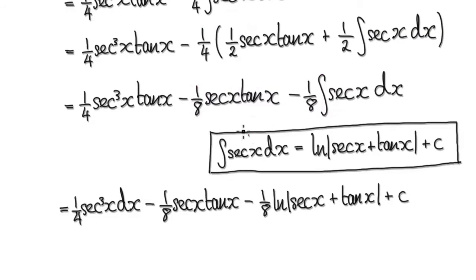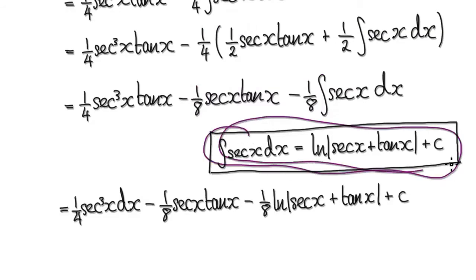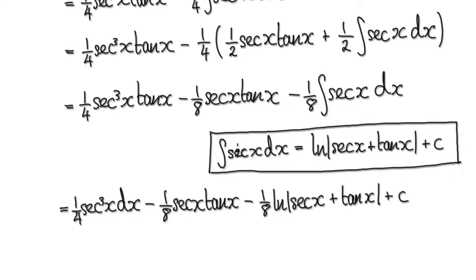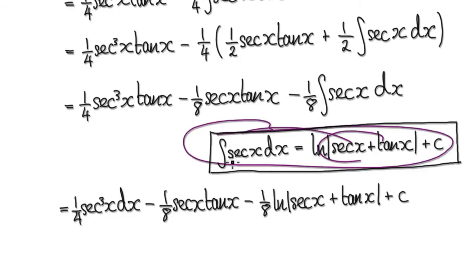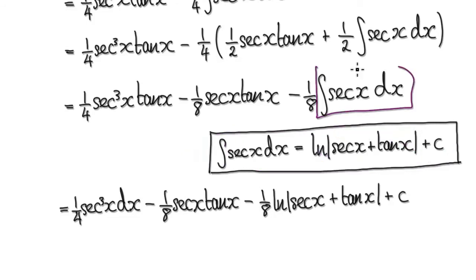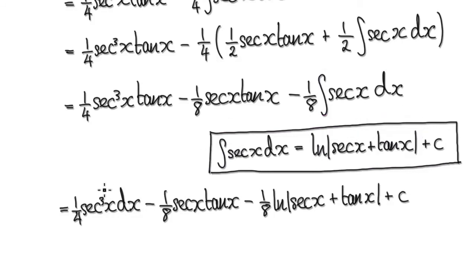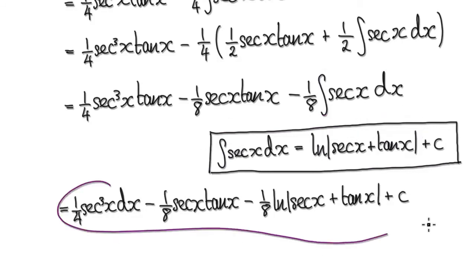We've done this many times, so by now I'm expecting you to know that the integral of secant of x is this. We've seen this many times, so the minute you see this block you can replace it with the known result. So that gives us this whole final expression.